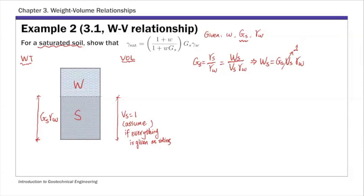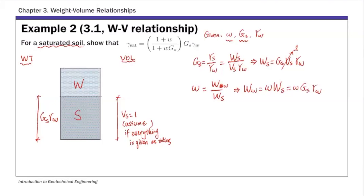We're also given water content, so we make use of the water content definition. Water content w is defined as weight of water over weight of solid. Now that we know the weight of solid, we can express weight of water as moisture content times weight of solid, which gives us w × Gs × γ_w.